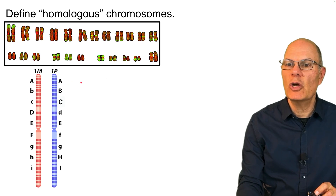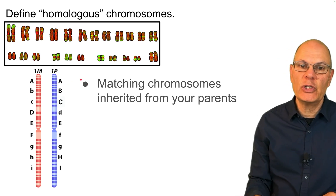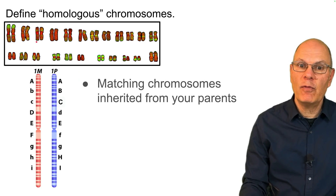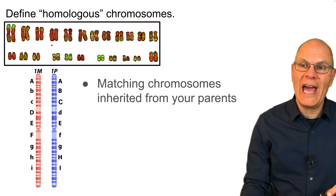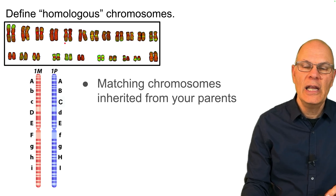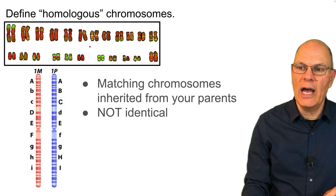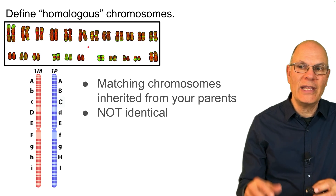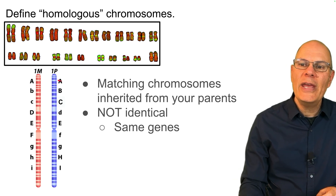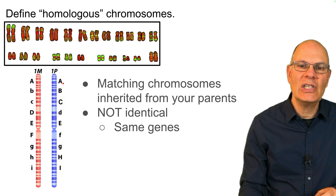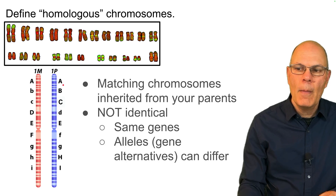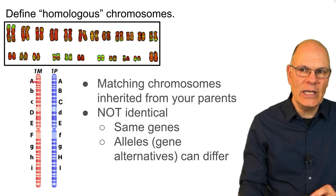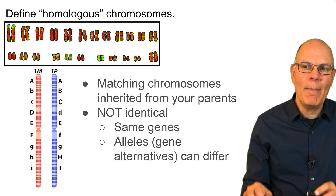Define homologous chromosomes. Homologous chromosomes are the matching chromosomes that you inherited from your parents. For example, here's chromosome three — one came from your mom, one came from your dad. Here's chromosome four, same thing. Here's chromosome five, and so on. They are not identical — how could they be? Your mom and dad aren't identical, so the chromosomes they passed on to you wouldn't be identical either. They do have the same genes in the same order, but the alleles — the specific code at the location where those genes are found — might be different.